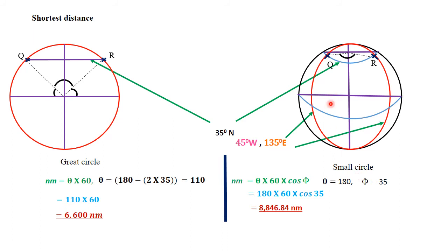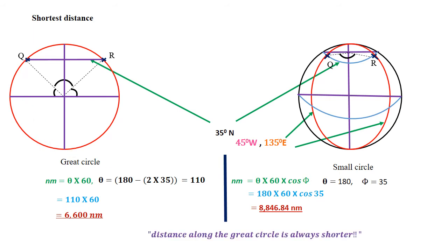Which route is longer? Without doubt, moving along the latitude is longer than moving through the north pole. This gives us a conclusion: whenever moving between two points on opposite sides of the earth whose angle difference is 180 degrees, it is better to go through either the north pole or the south pole, not along the latitude, as the latitude route is longer.